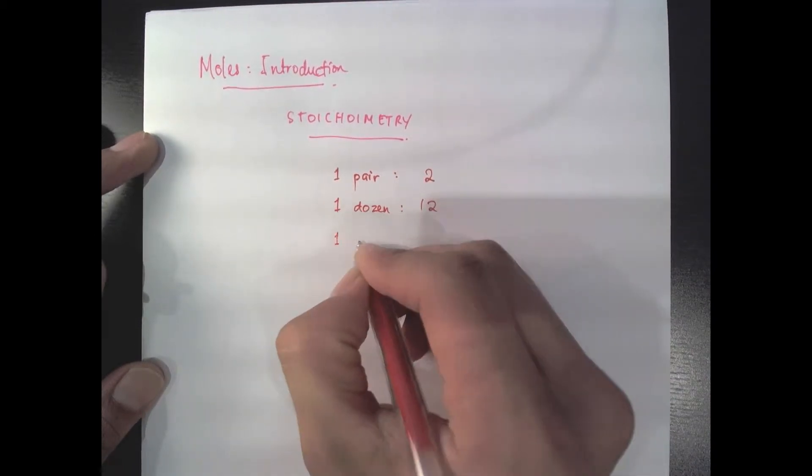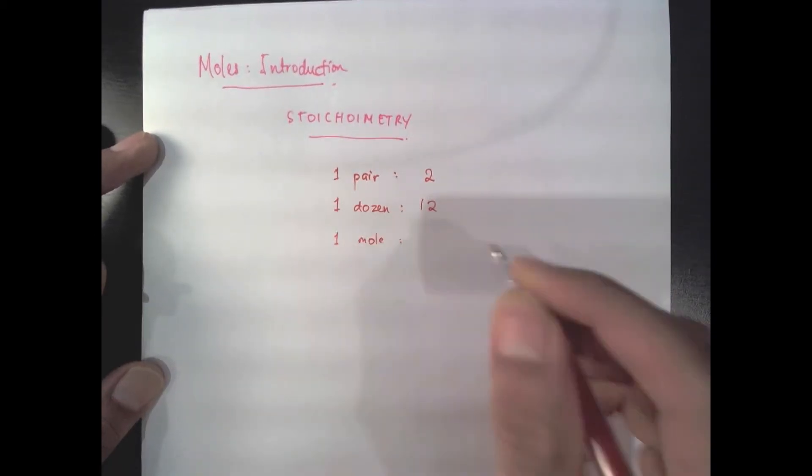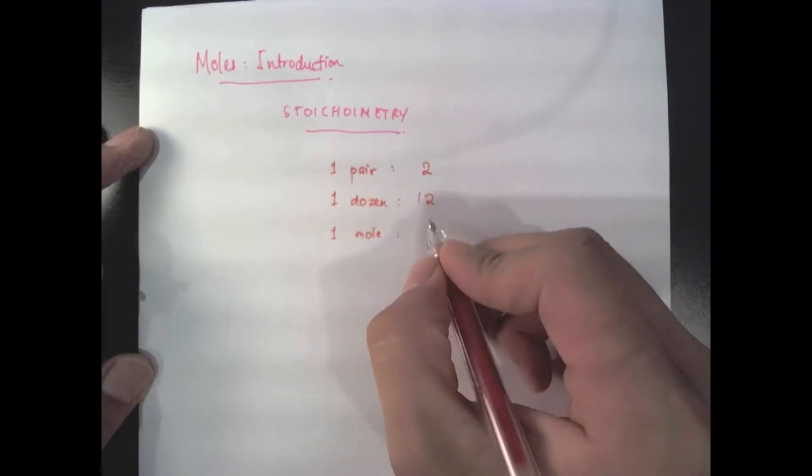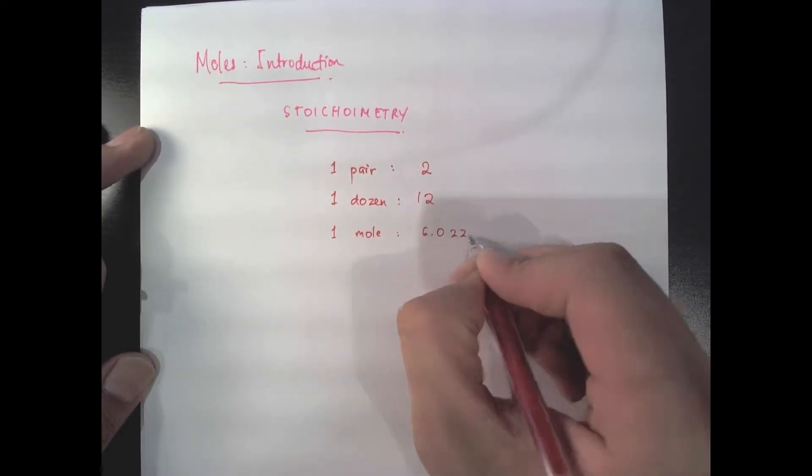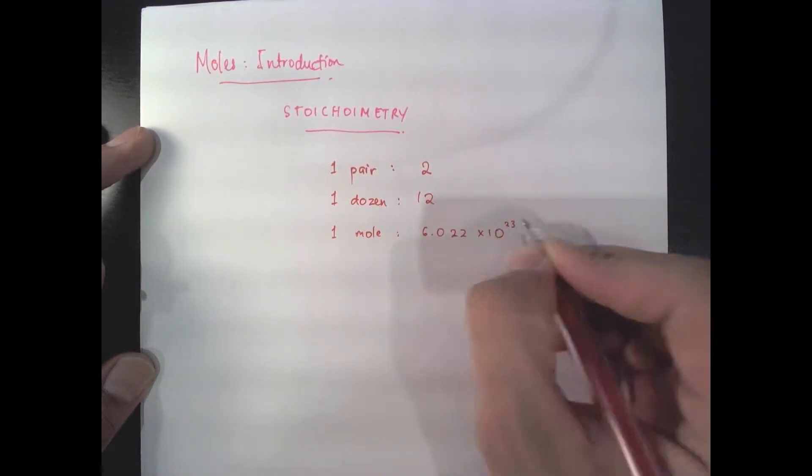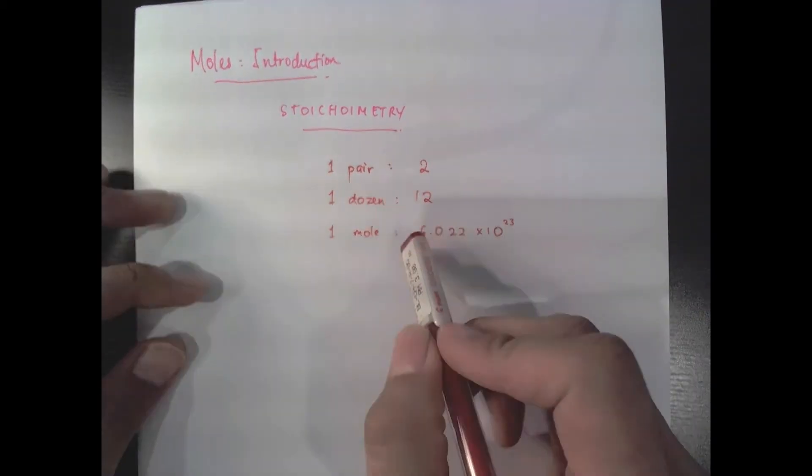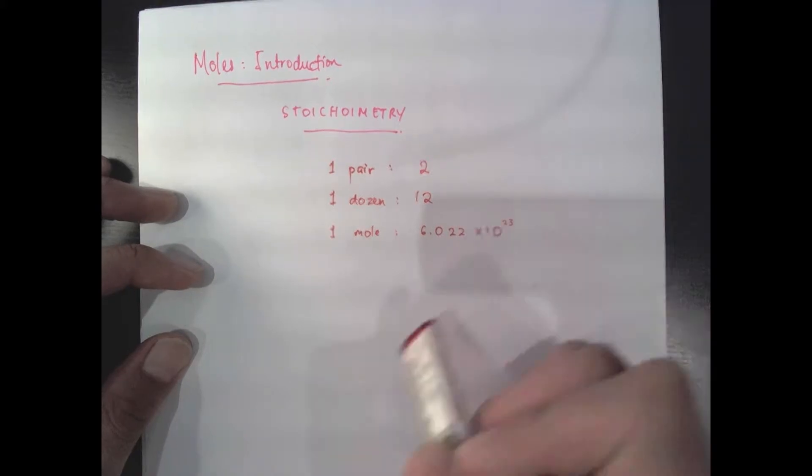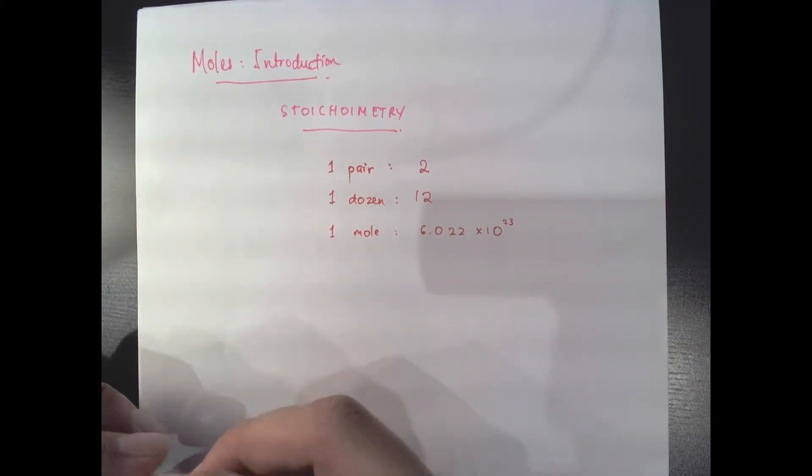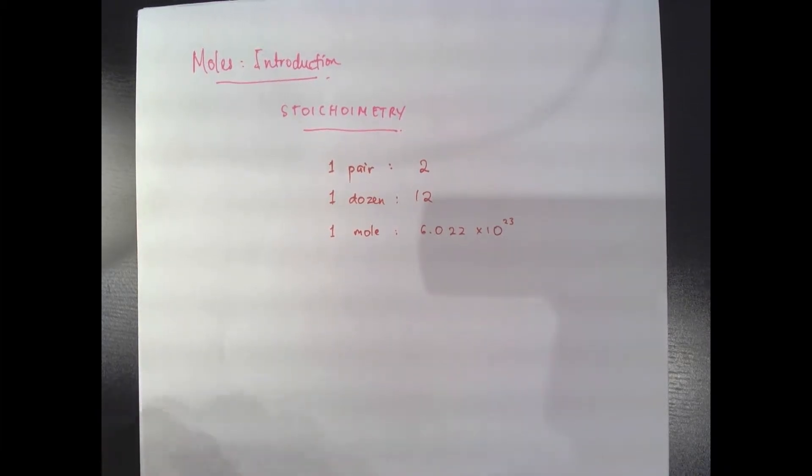So the word mole is nothing more than a number. It just happens to be a really big number. If I have a mole of pencils, I'm going to have six followed by 23 zeros, that many pencils. I know this topic is frequently confusing, so I'll try as much as possible to demystify the mole.